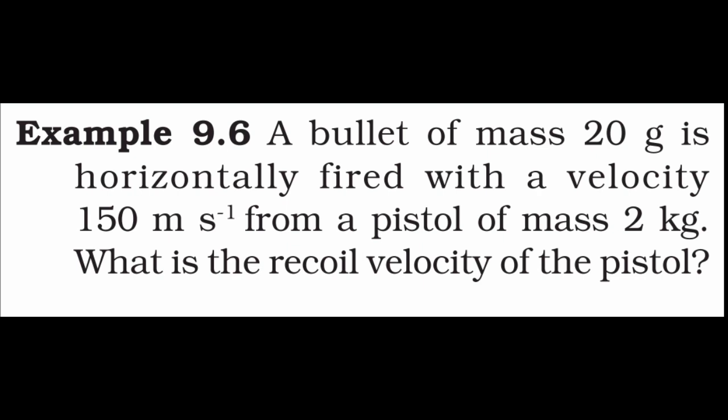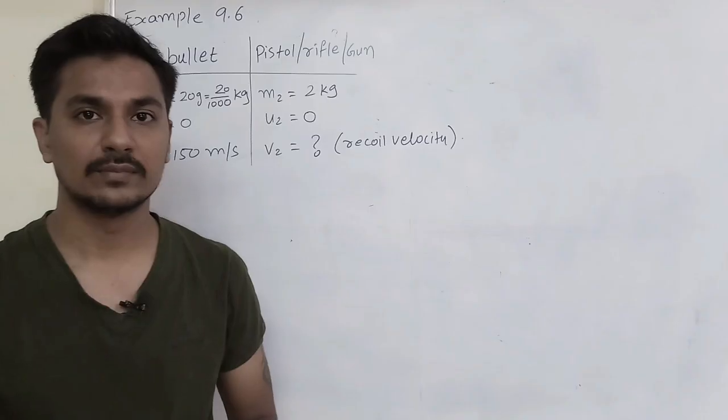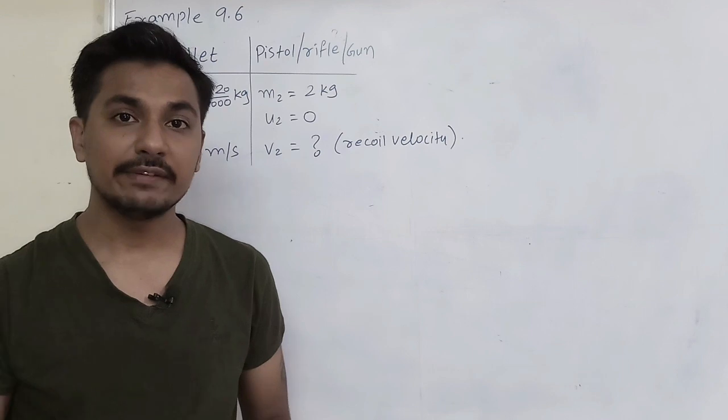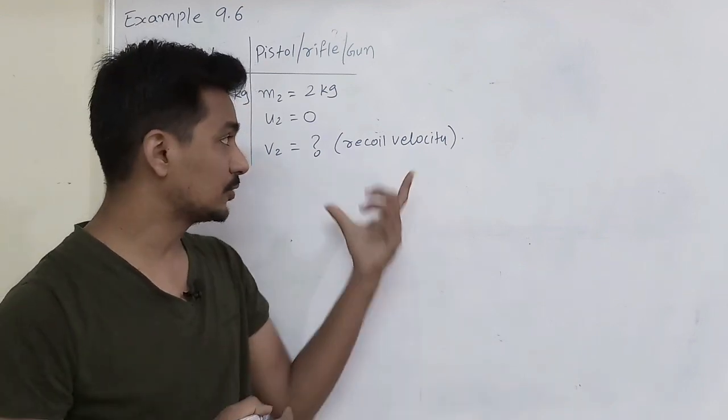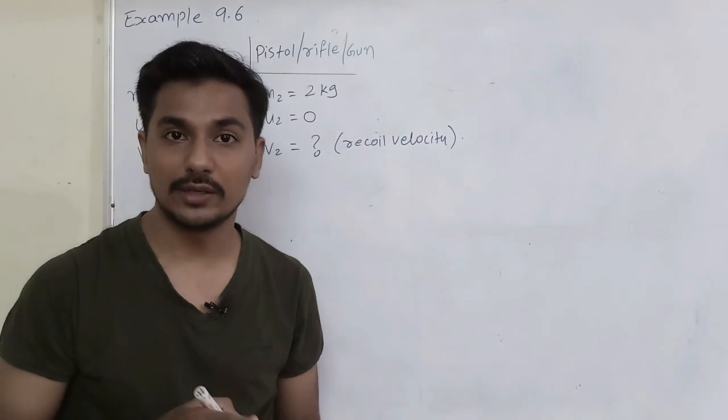A bullet of mass 20 grams is horizontally fired with a velocity of 150 meters per second from a pistol of mass 2 kg. What is the recoil velocity of the pistol? First let us try to understand what is recoil velocity and how to solve this kind of question. Today I will teach you the easiest way to solve this kind of question that is based on recoil velocity.